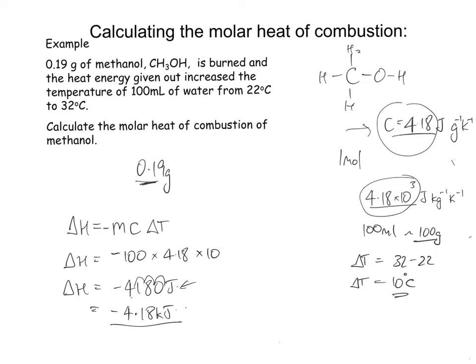That is the amount of kilojoules that was only for 0.19 grams of our fuel methanol. We need to know how many kilojoules will be for one mole of methanol. One mole of methanol CH₃OH is 12 plus 4 times 1.08 plus 16, so we've got 32 grams is one mole. How much for one mole?